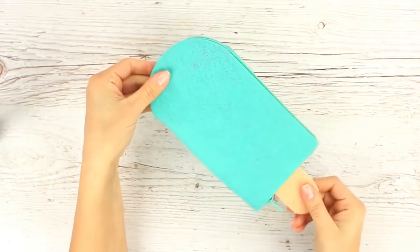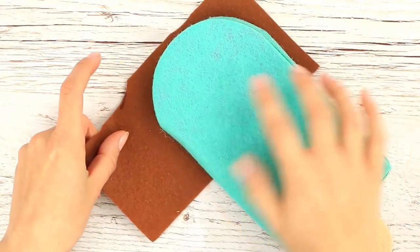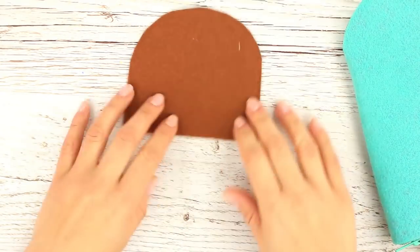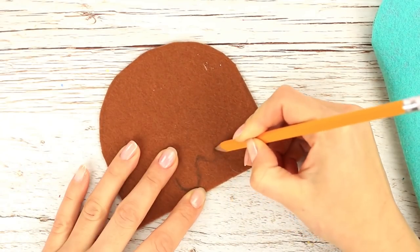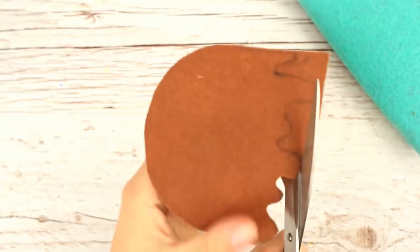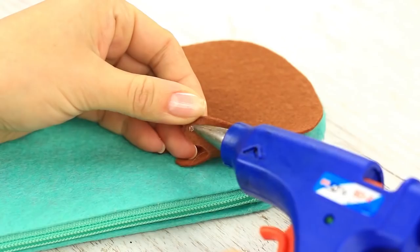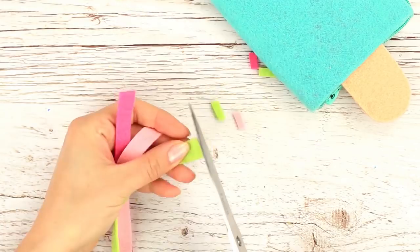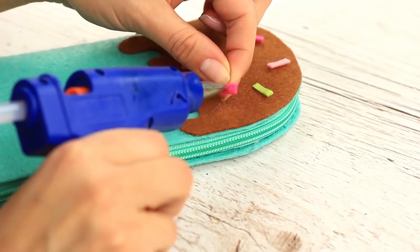Continue decorating the case. Let's make a chocolate shell topping. Take brown felt, define the size, cut it out. To look more realistic, make the bottom wavy. Cut it out. See how it fits the ice cream. Perfect! Attach the topping. Add some sprinkles. Cut them out from the multicolor felt stripes. Hot glue the sprinkles randomly.